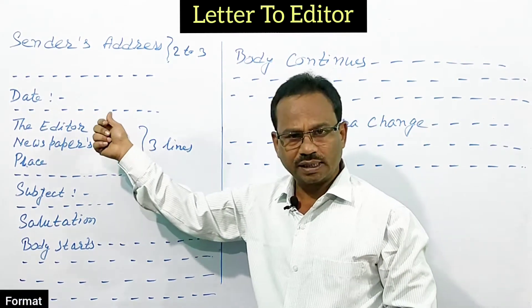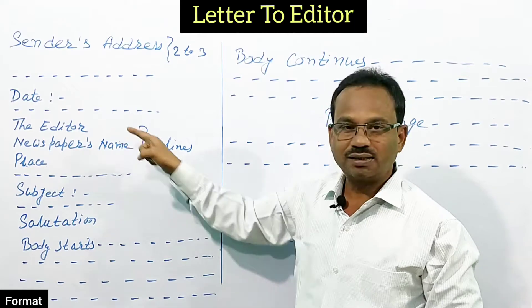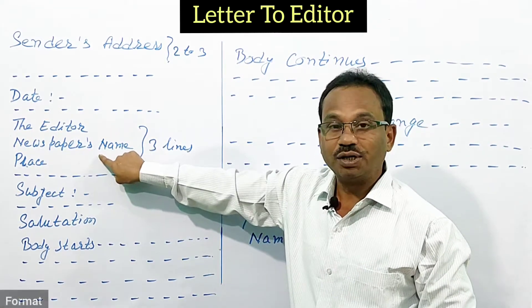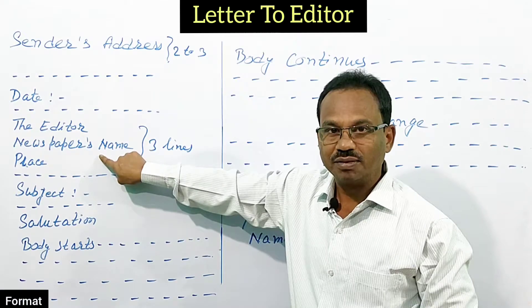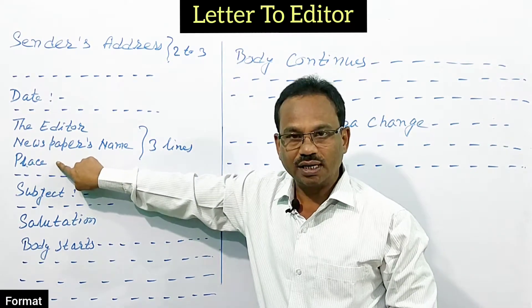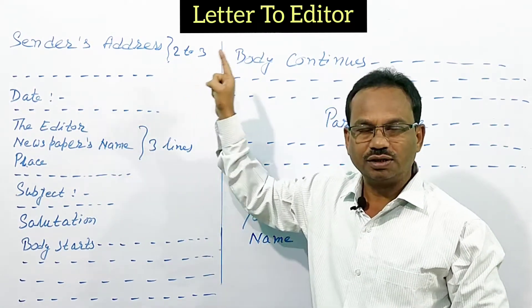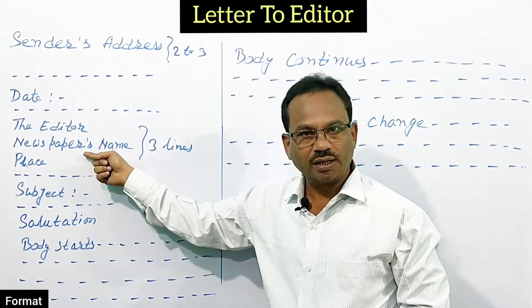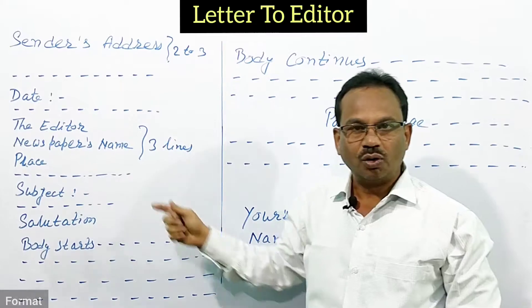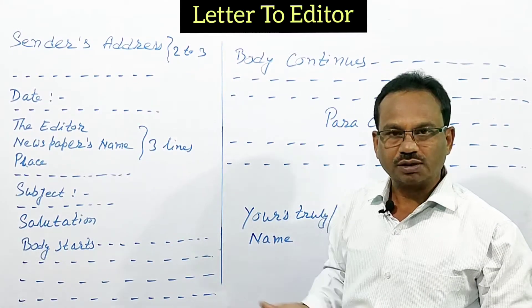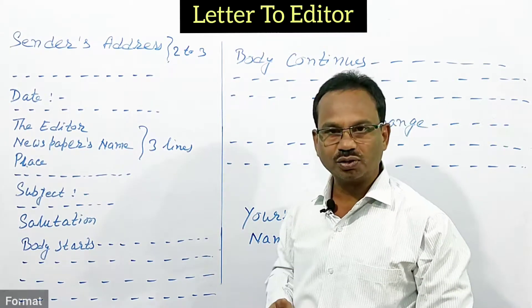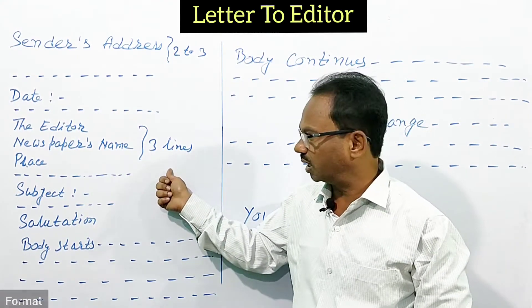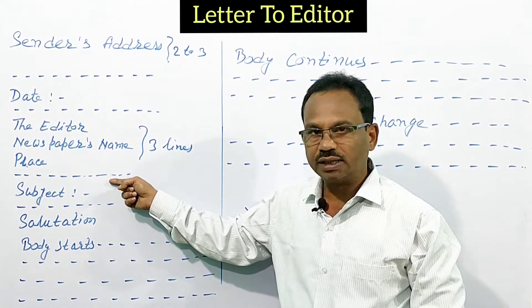The receiver's status is very clear — you are writing the letter to the editor, so you have to write 'The Editor,' then the newspaper name, and then the place. Generally, if there has been an incident in your district, you will write the newspaper name and the editor accordingly. Then you will describe the problem.